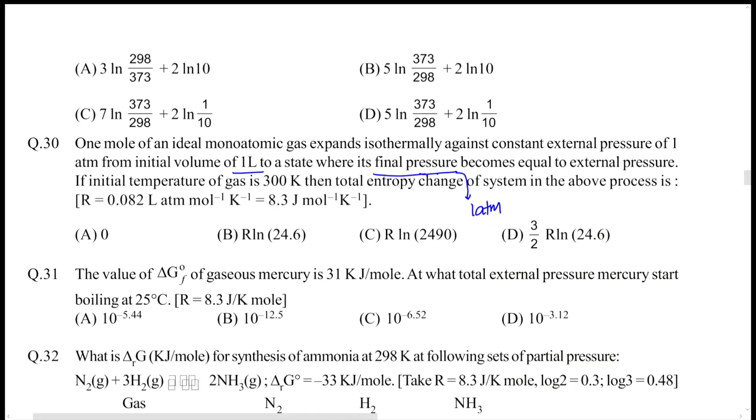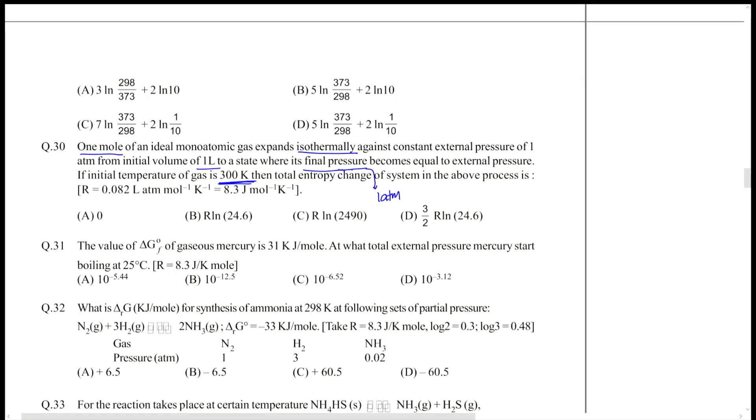We have one mole at constant temperature. It says isothermally, and the temperature is fixed at 300 kelvin. You have to find the total entropy change. Again, same as a couple of questions ago, we can write entropy change for an isothermal process as nR ln of V2 by V1.